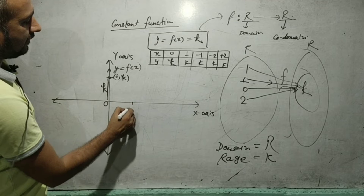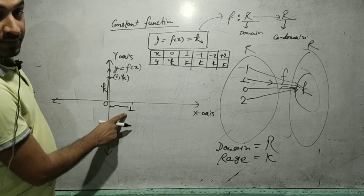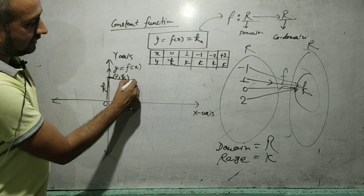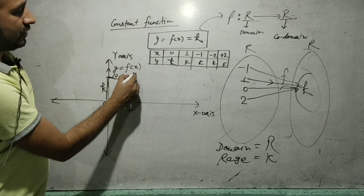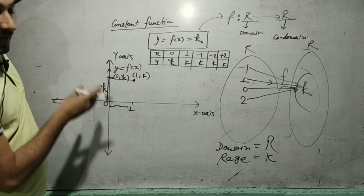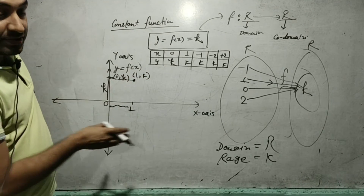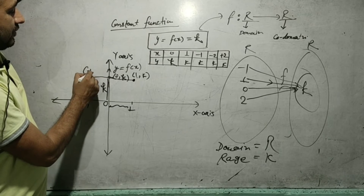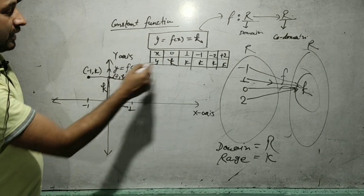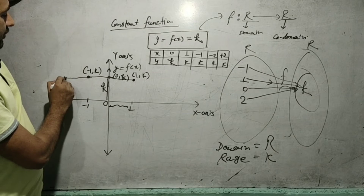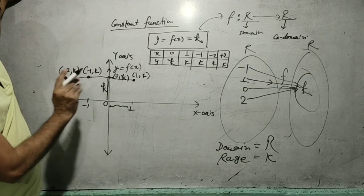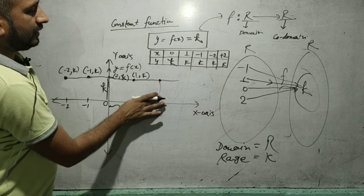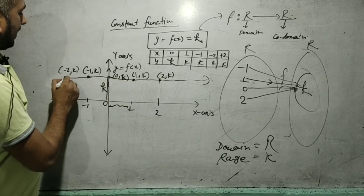If x = 1, I take a distance of 1 unit and locate the point — the coordinates are (1, k). For x = -1, the point is (-1, k). For x = -2, the point is (-2, k). For x = 2, the point is (2, k). Connecting all these points gives you the graph of the constant function.